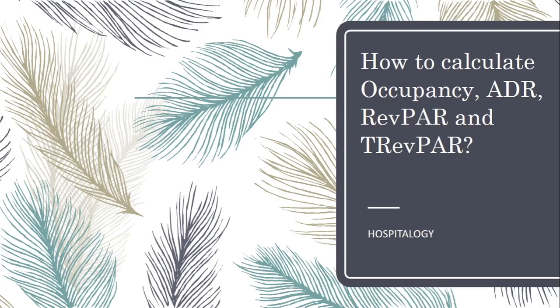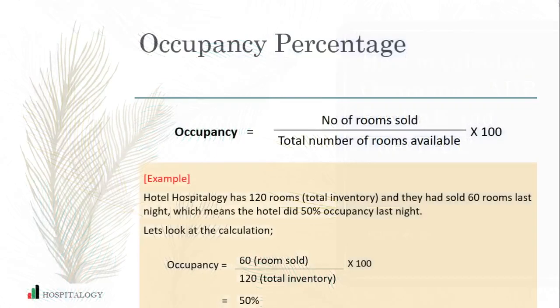First, let's understand why we are calculating this. Every business or establishment has its purpose, which is primarily to make a profitable business. But how do you know whether a particular establishment is making a profit or not? That's why the industry has come up with something called KPI — Key Performance Indicator — which is like a health code of a human being. This health code differs business to business based on the nature of the business. The KPIs for the hotel industry are many, however today we're going to discuss the key four parameters.